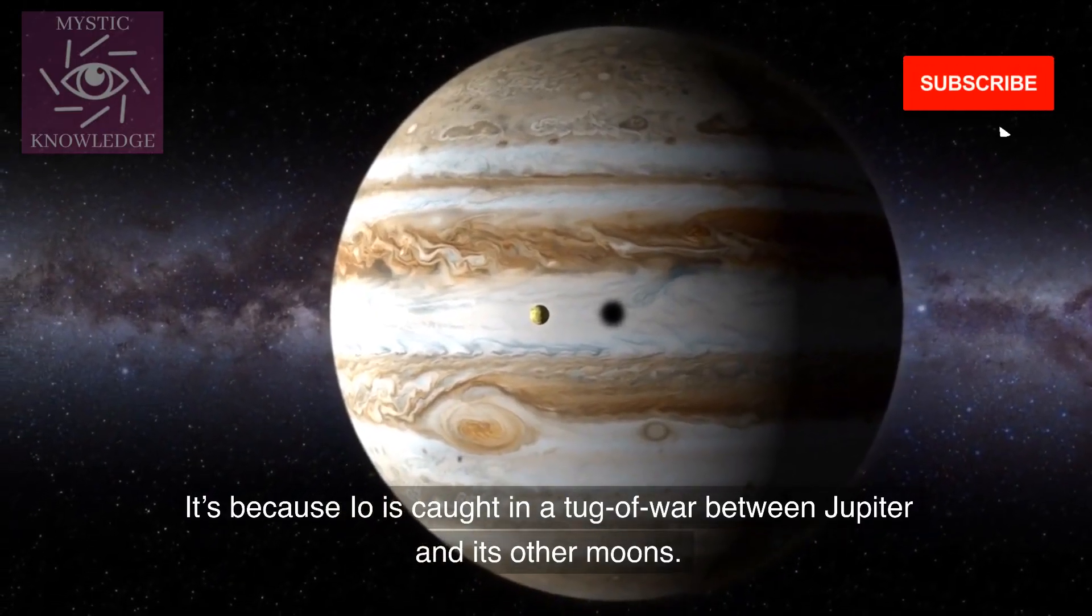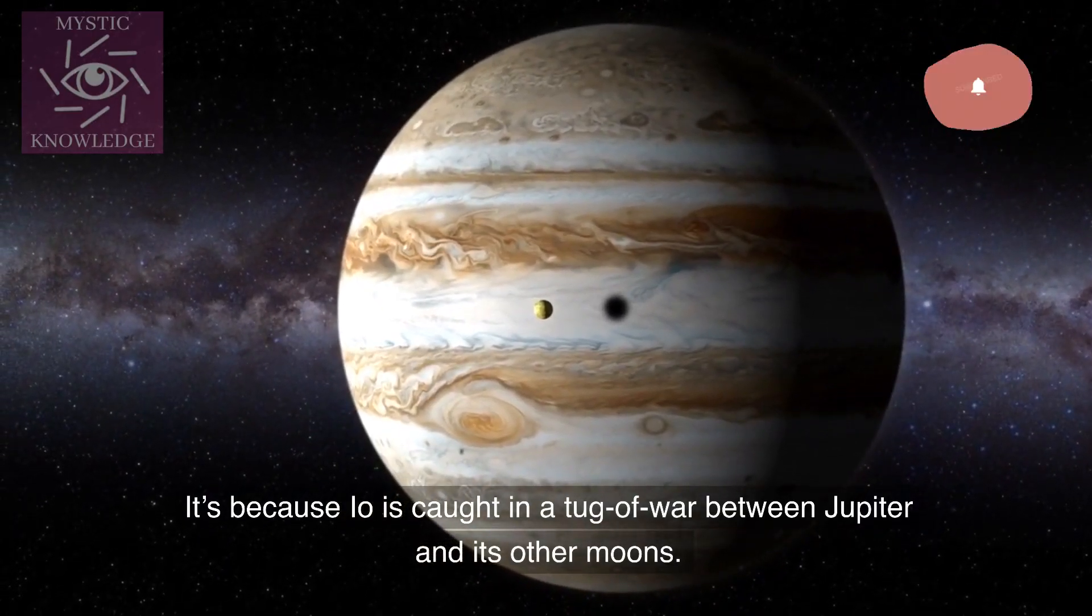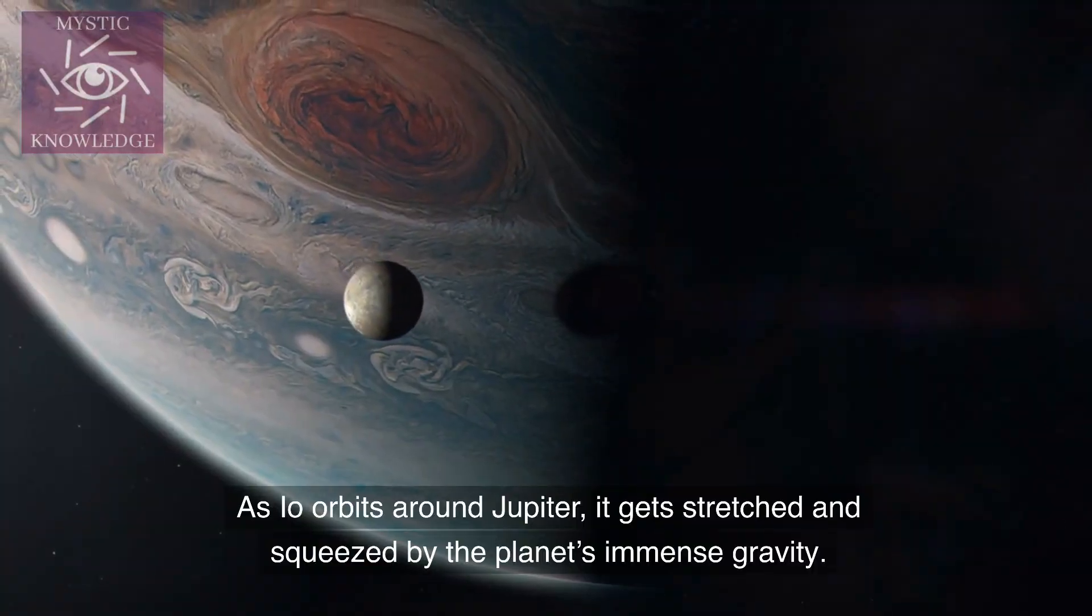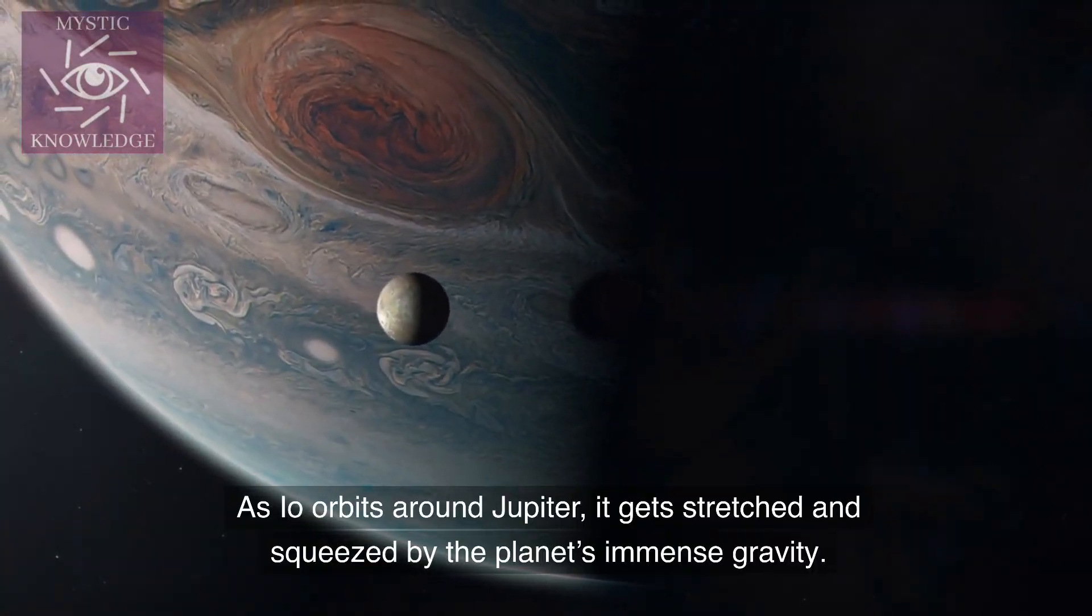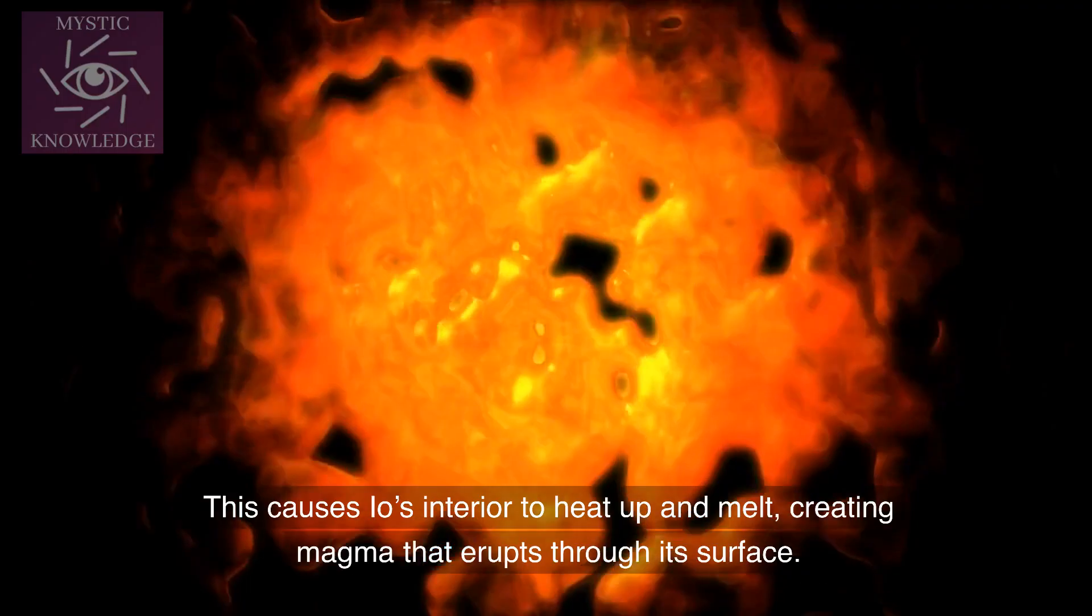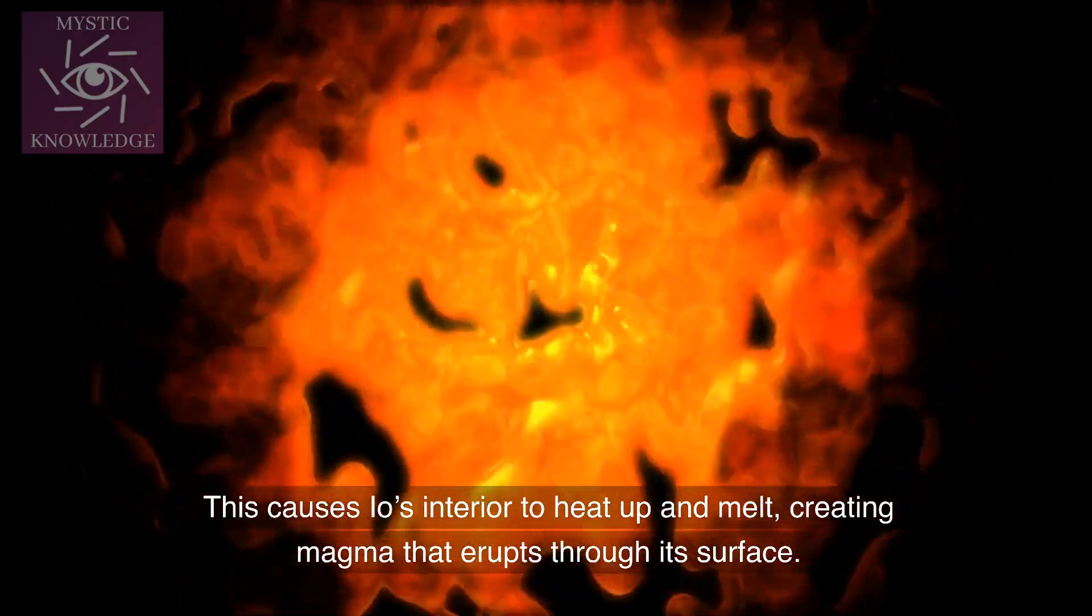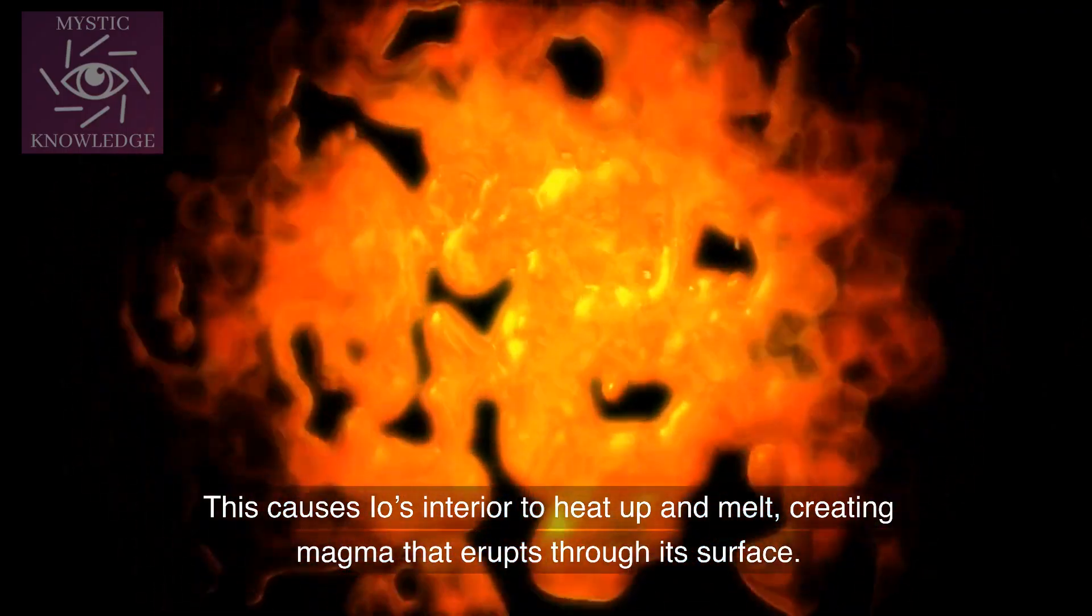It's because Io is caught in a tug of war between Jupiter and its other moons. As Io orbits around Jupiter, it gets stretched and squeezed by the planet's immense gravity. This causes Io's interior to heat up and melt, creating magma that erupts through its surface.